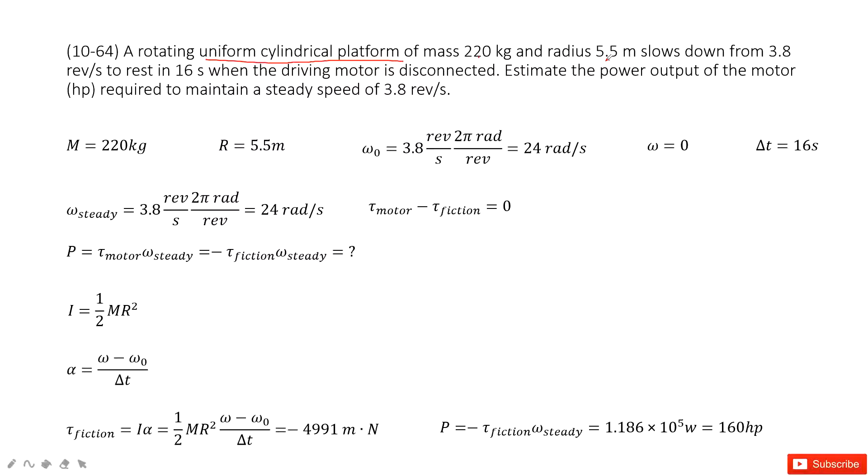Then we get the mass of this motor and radius. And we find this rotation motion just slows down, slow down to stationary. And initial angular velocity is given, final angular velocity is given, and time taken is given.